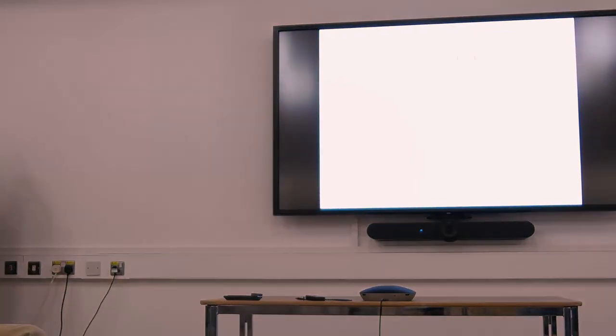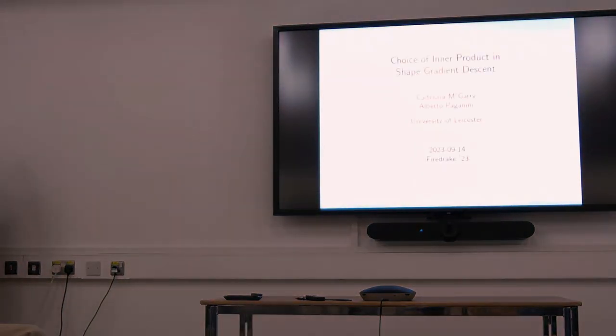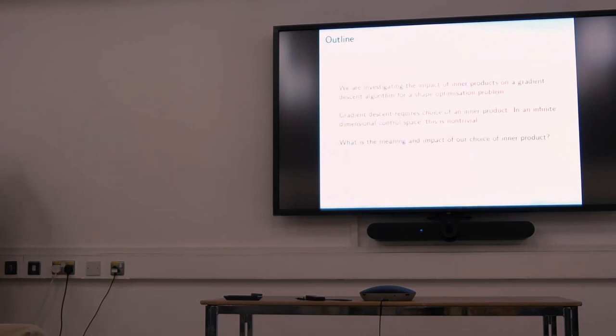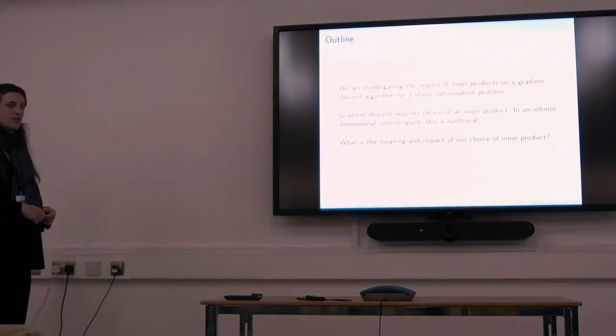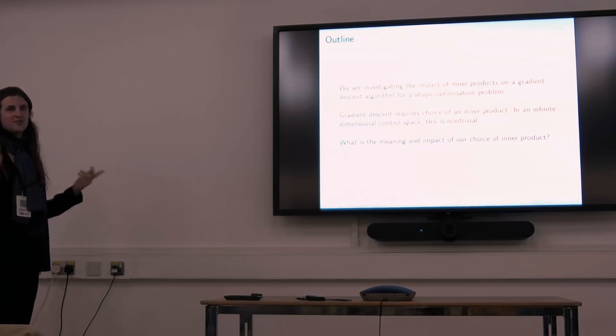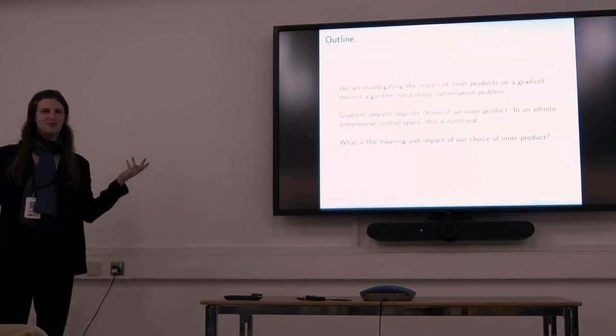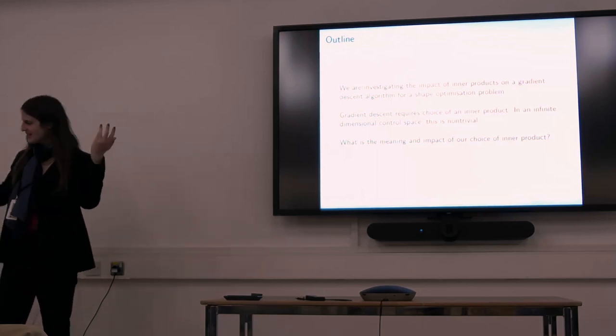The effect of choice of inner product in shape gradient descent, as hopefully you can see when the TV is working. So investigating the impact of choice of inner product on gradient descent for shape optimization. For gradient descent we need to choose an inner product, as Alberto just explained to us, and then why do we use a particular inner product, what effect does that have?